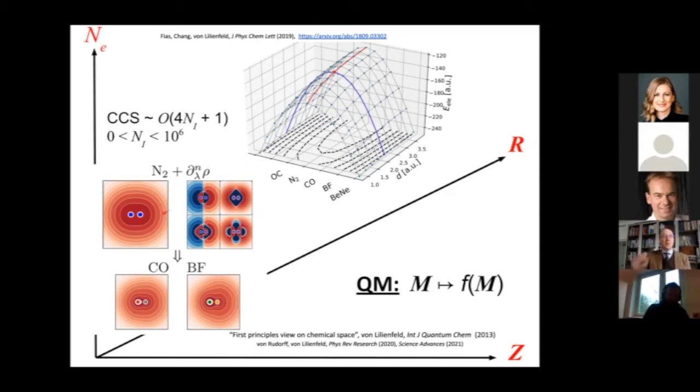You see this from a different paper, research we published last year. If you take N2, this is the electron density, and then you perturb it towards CO or BF, you get these perturbed electron densities as a function of order. This is the first, second, third, fourth derivative of the electron density, and you pile them up as a Taylor expansion.